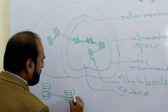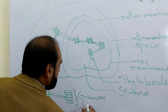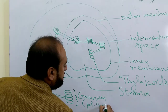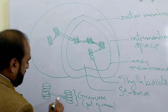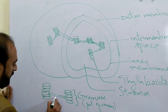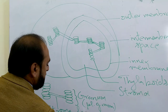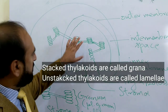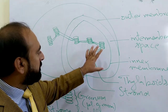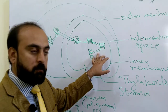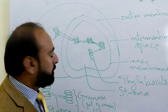The stacked region is called the grana (plural: grana). Here you see the stacked region and the non-stacked region called the stroma lamellae. These grana are interconnected — the stacks of grana are interconnected by non-stacked regions where stacking is absent, and that is called the stroma lamellae.